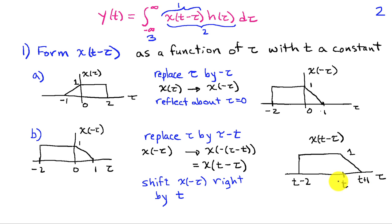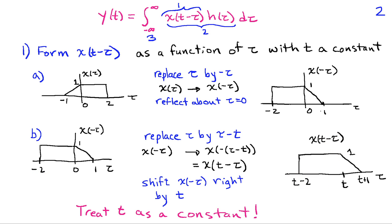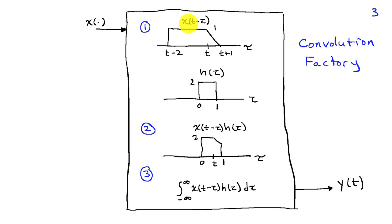The key thing to remember when you do this shifting is that whatever occurred at zero in x(−τ) will now occur at time t in x(t − τ). This edge occurred at time one, and that's going to occur at time t plus one. And the edge on the left occurred at time minus two, so that'll show up as t minus two in x(t − τ). It's really important to view t as a constant — the independent variable is τ, and t is a constant with respect to this integral. Then we'll graph h(τ) and form the product x(t − τ) · h(τ).